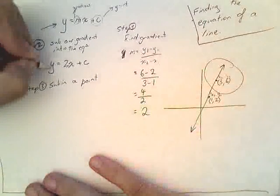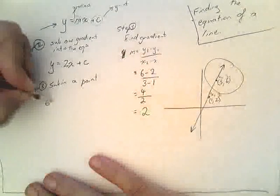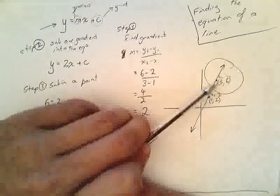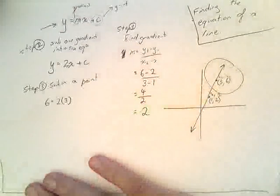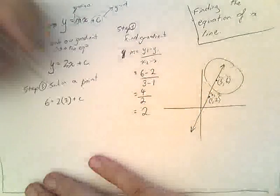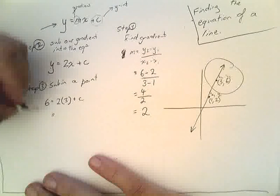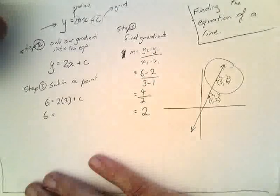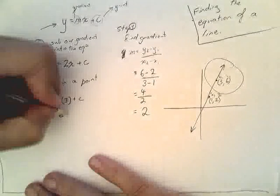So, that means that y is going to be equal to 6. 6 is equal to 2 times... x is going to be equal to 3 times 3 plus c. So that means that 6 equals 2 times 3, which is 6, plus c.